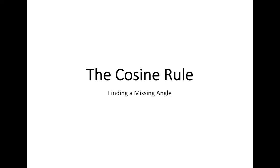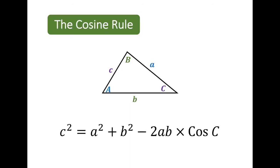This video is going to look at using the cosine rule to find the missing angle in any triangle. The cosine rule formula is c squared equals a squared plus b squared minus 2 times ab times cos of angle c.